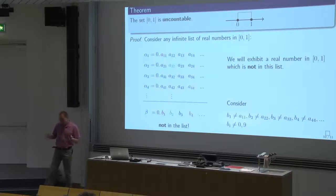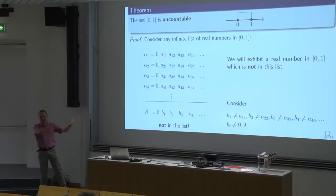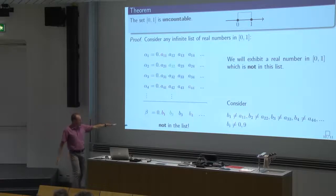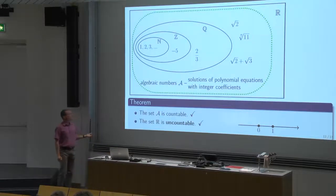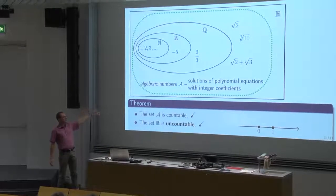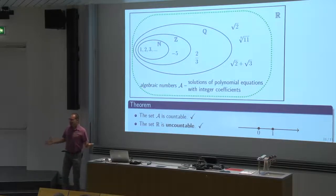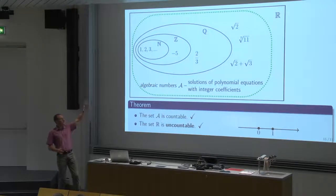All at once, we choose Bi to be different from Aii. We constructed a number outside of the list. So if you go to our picture: the set of algebraic numbers, just like the rationals, is countable — you can list it. But that infinite list cannot include all the real numbers. The real numbers cannot be put in a list. Therefore, there are real numbers which are not algebraic.